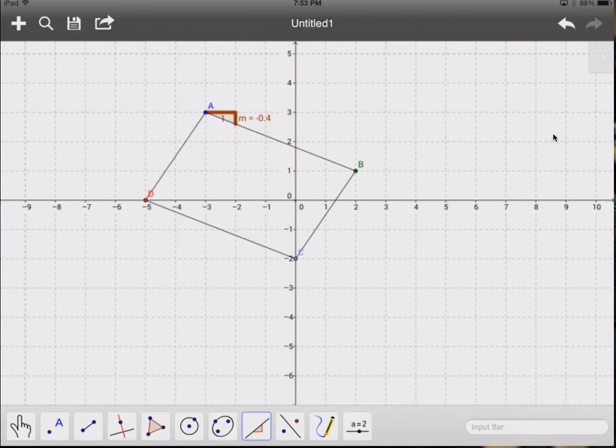That's a negative slope because it goes down from left to right, and the rise over run you can see is down two and over five. That two-fifths reduces to 0.4.